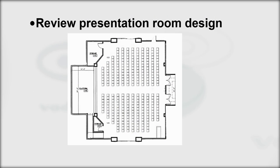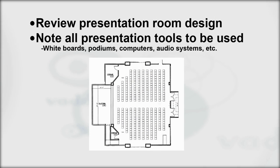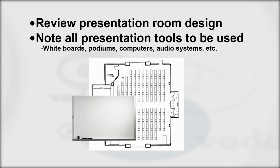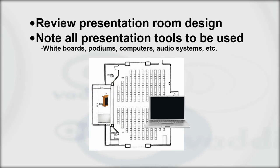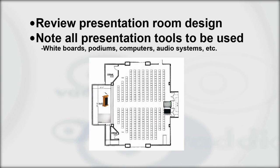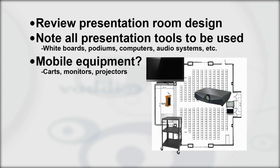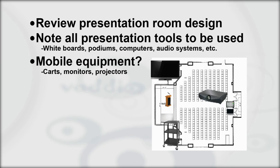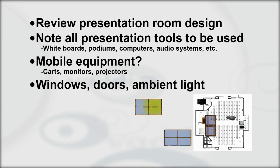Review the current or planned presentation room design. Note all existing and future presentation tools to be used in the room — examples being whiteboards, podiums, computers, audio systems, etc. Is there any equipment that may be mobile and moved around easily? Be aware of window and door locations. Identify any sources of ambient light.